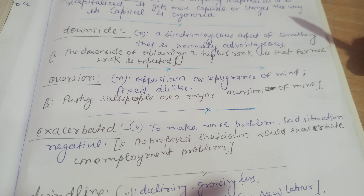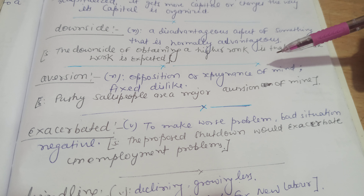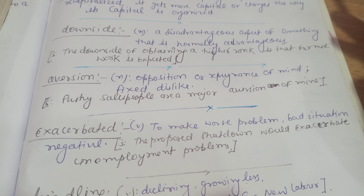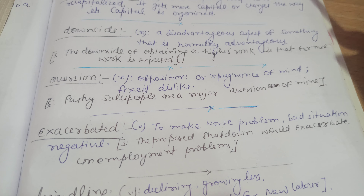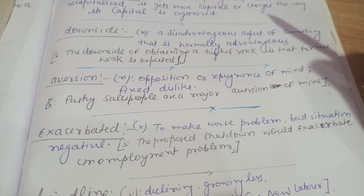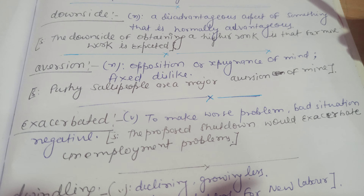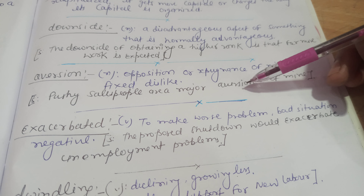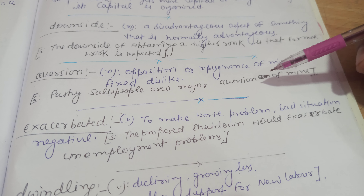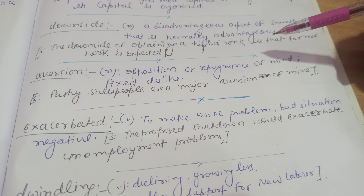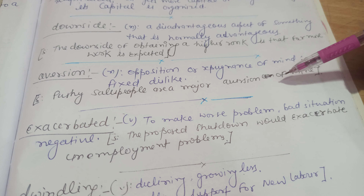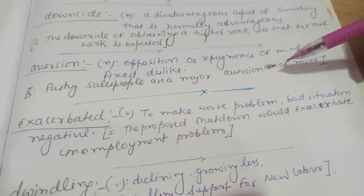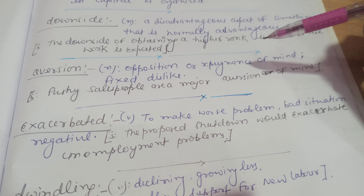Aversion. This is a noun meaning opposing or repugnance of mind; a fixed dislike. The sentence for this word is: pushy salespeople are a major aversion of mine.